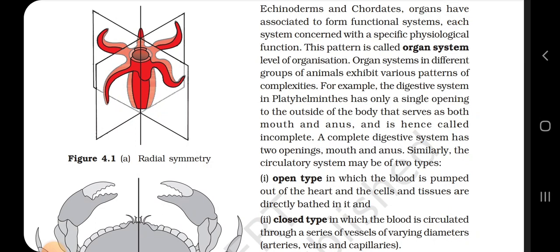Organ systems in different groups of animals exhibit various patterns of complexity. For example, the digestive system in Platyhelminthes has only a single opening to the outside of the body that serves both as mouth and anus, and is hence called incomplete. A complete digestive system has two openings: mouth and anus. Similarly, the circulatory system may be of two types: open type, in which blood is pumped out of the heart and cells and tissues are directly bathed in it; and closed type, in which blood is circulated through a series of vessels of varying diameters — arteries, veins and capillaries.